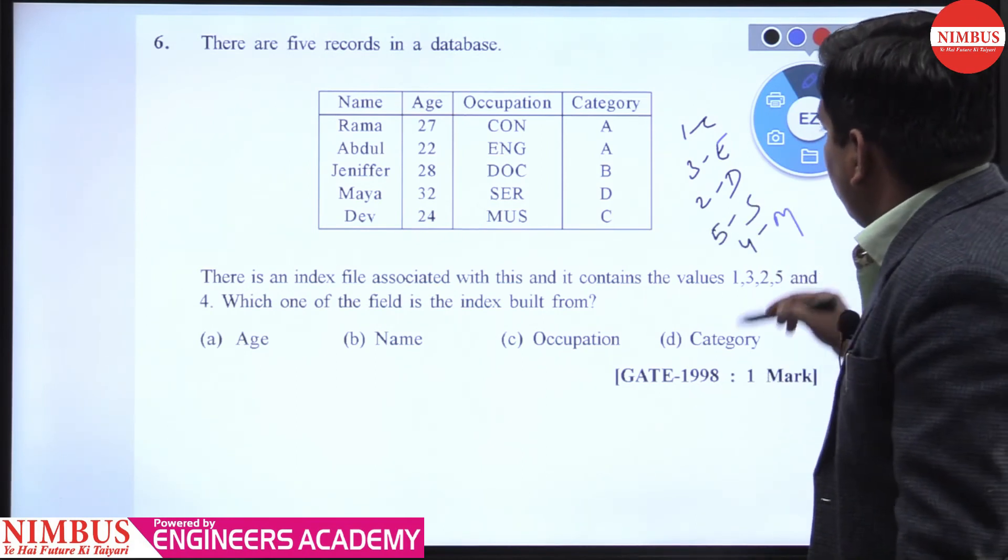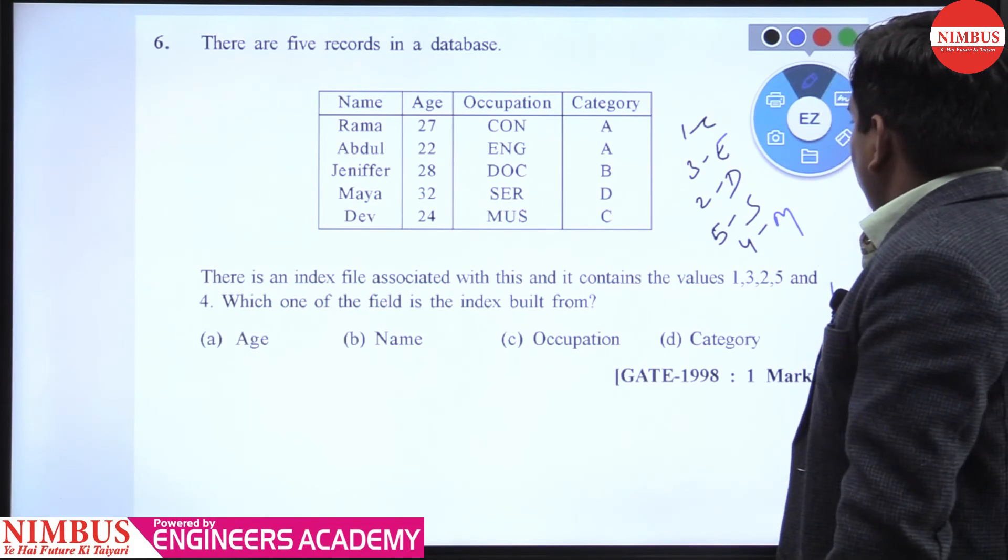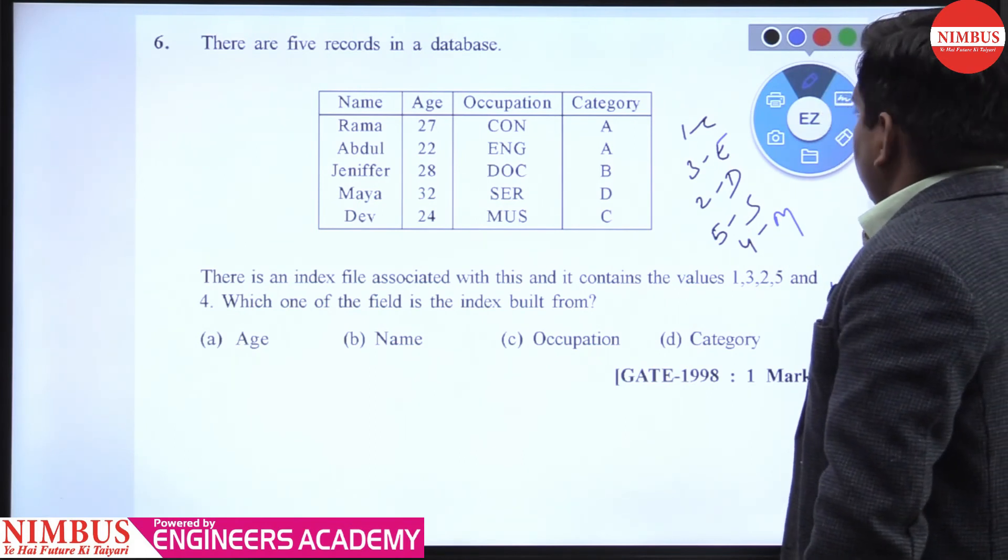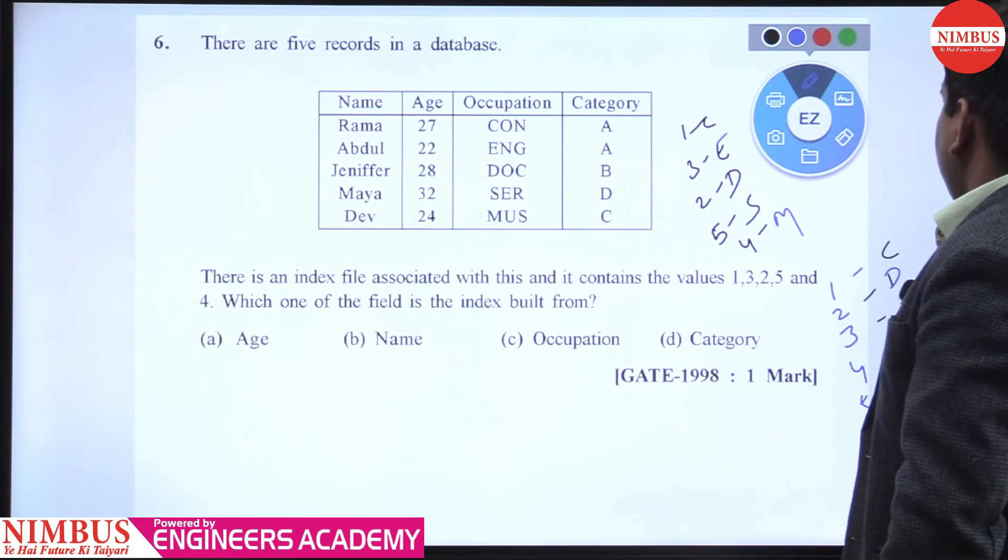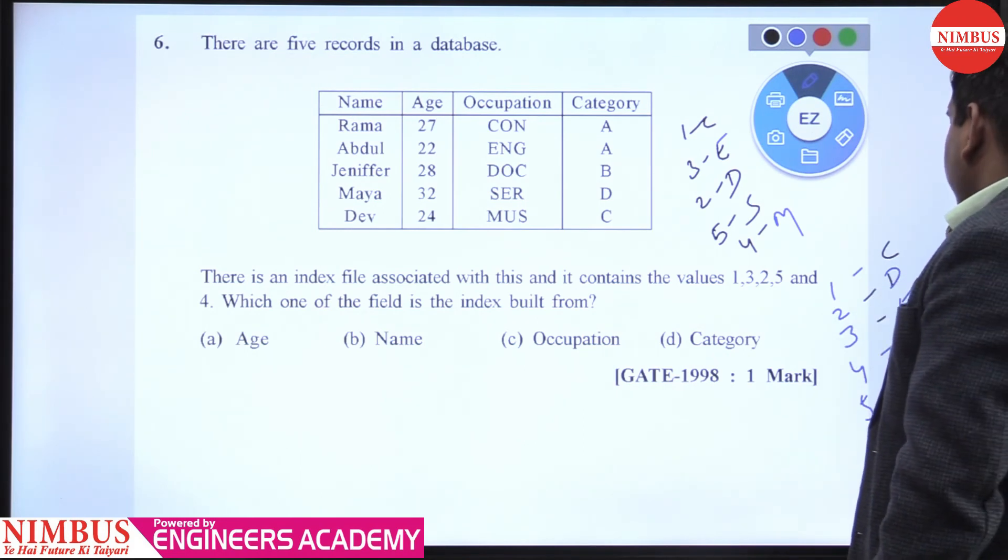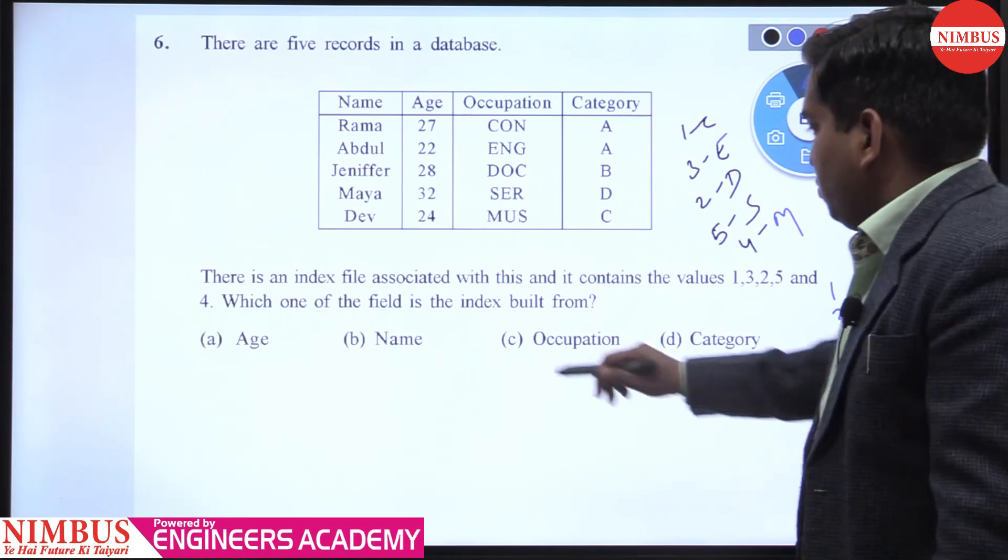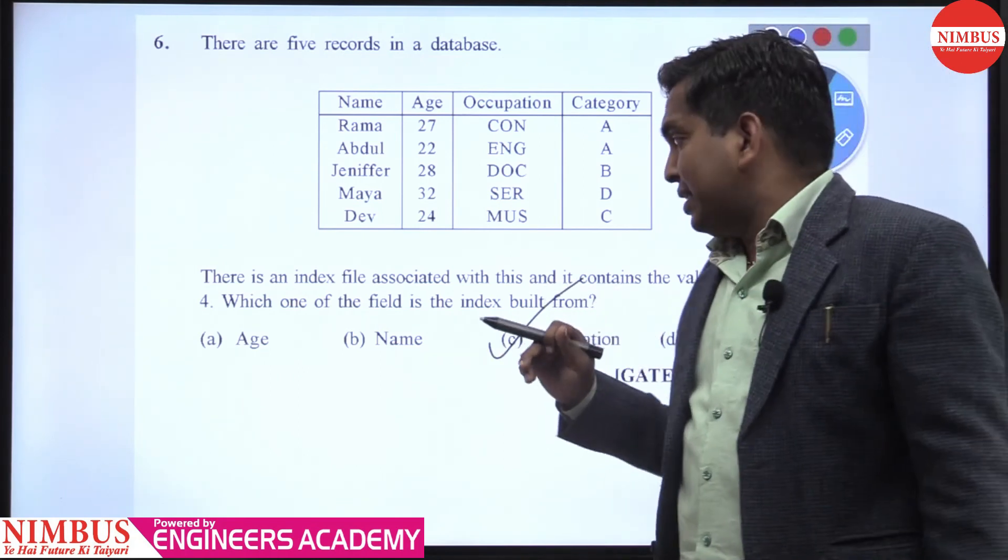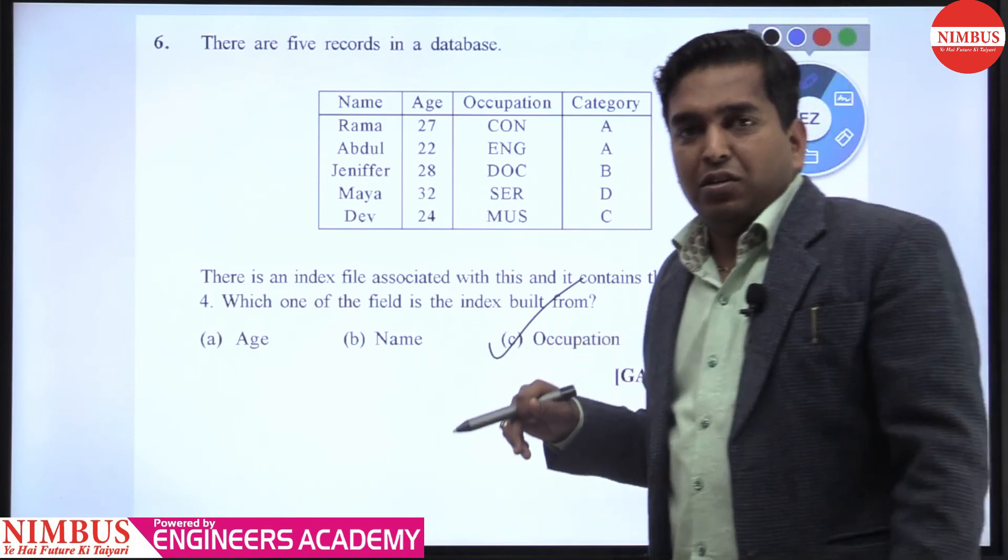So you can write also 1-2-3-4-5: C-D-E, and four for M and five for S. So directly you can say the index is built from occupation. Getting my point?